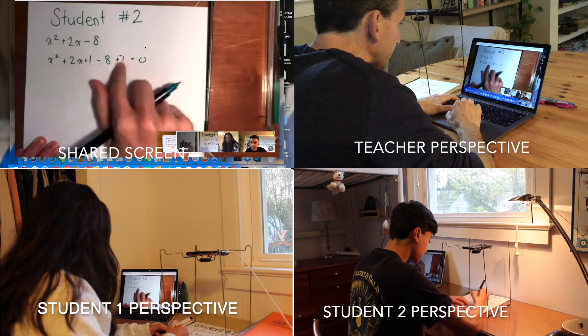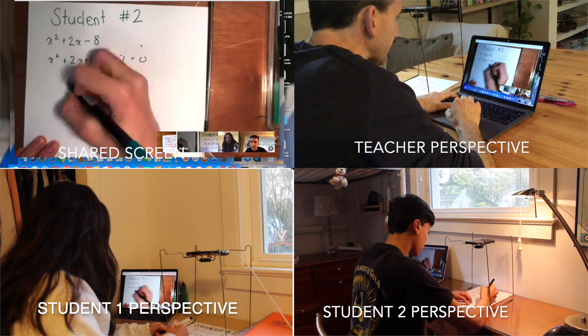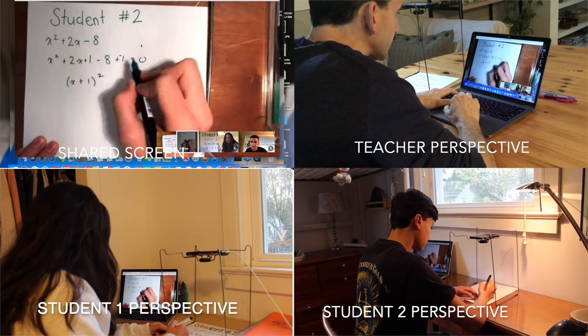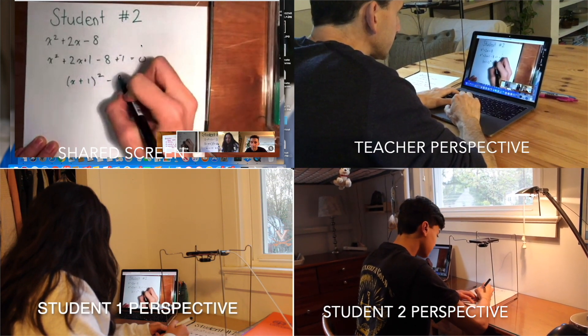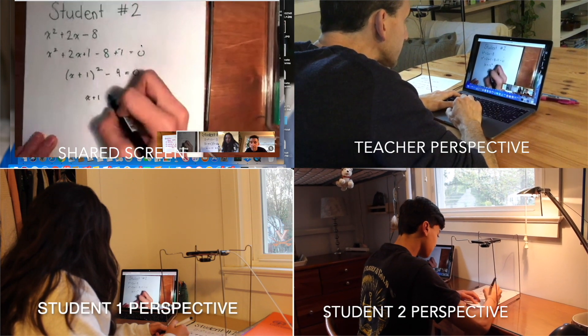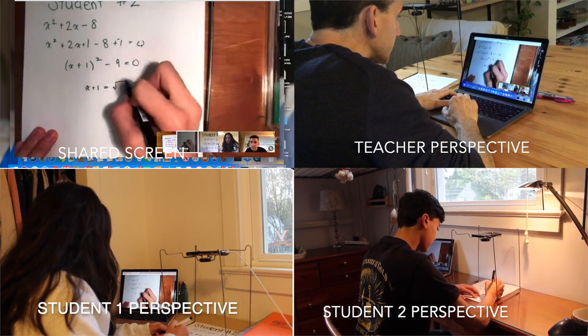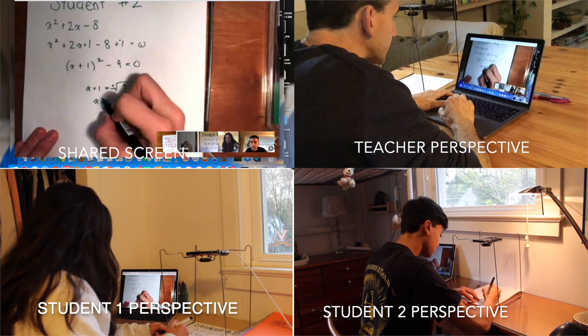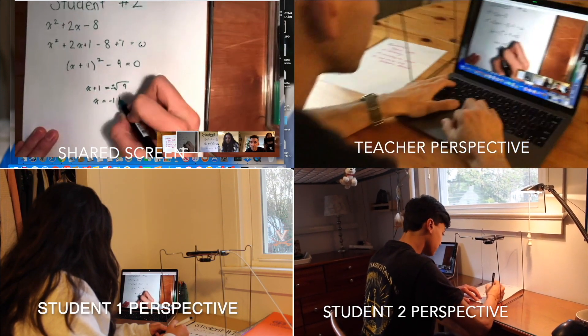You can say x plus 1 quantity squared minus 9 equals 0, which can be further simplified so that x plus 1 equals plus or minus the square root of 9, which can be solved to say that x equals negative 1 plus or minus 3.